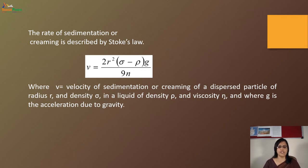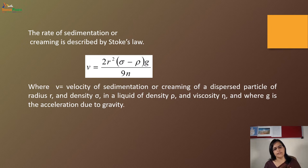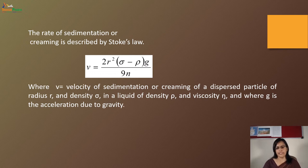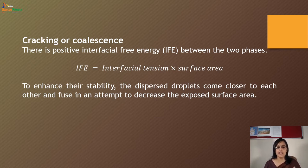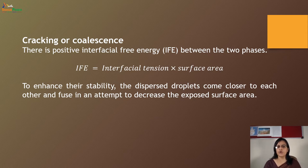The rate of sedimentation or creaming is described by Stokes' law, where V is the velocity of sedimentation or creaming of the dispersed phase particle, R is the radius, density of the particle and liquid, eta is the viscosity, and g is the acceleration due to gravity. Cracking and coalescence involve a positive interfacial energy between two phases. Interfacial tension multiplied by the surface area means that, to enhance stability, the dispersed globules come closer and fuse to decrease the exposed surface area.